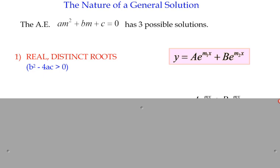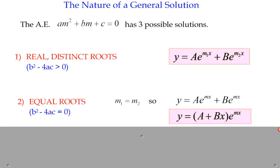The second case is equal roots, where m₁ and m₂ are the same value. That means we have a common factor of e^(mx). Rather than just having A plus B as a combined constant, we introduce a multiple of x so the two terms remain distinct. So the general form for equal roots is y equals (A + Bx)·e^(mx), and we'll go over examples of this shortly.